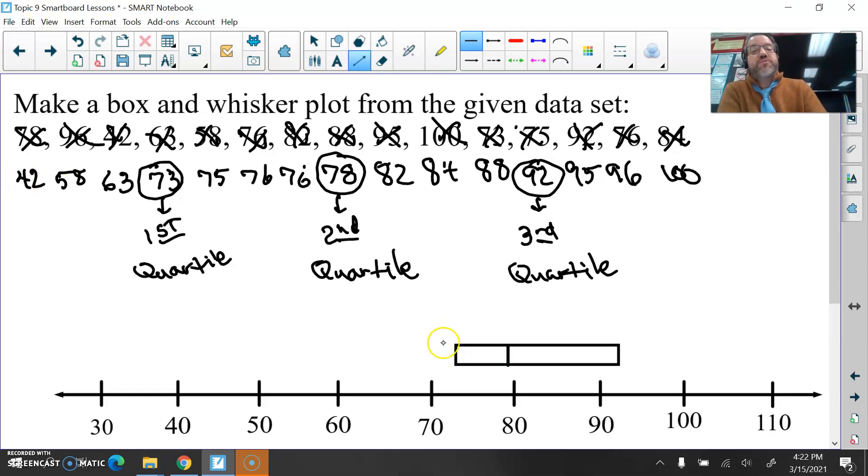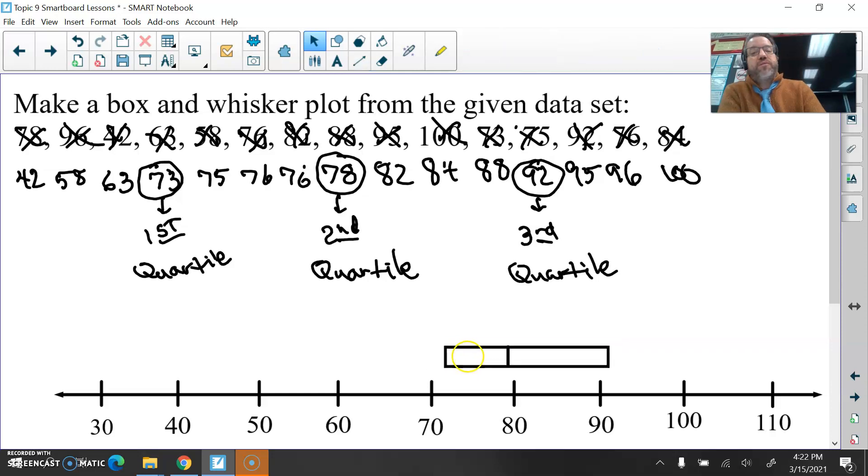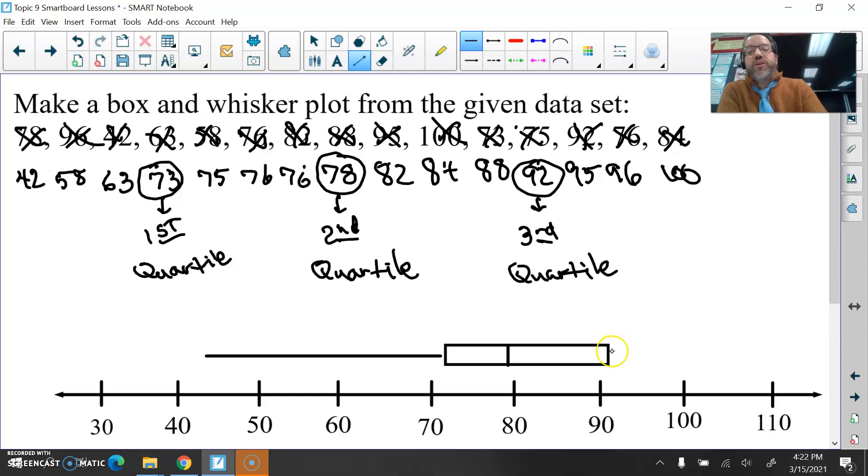And then the whiskers extend down to the lower extreme, 42, and to the upper extreme, 100. And then I'll put a couple of points in here. That's how you make a box and whisker plot. All right, I don't have much more time here, but look how long this whisker is over here. That's because 42 is an outlier. It's really a lot lower than the other scores on this test. Okay, hope that helps. I'll see you later.